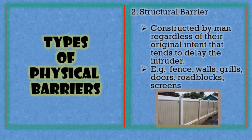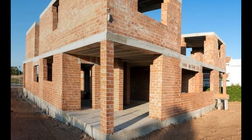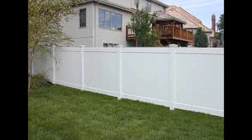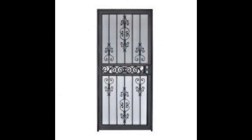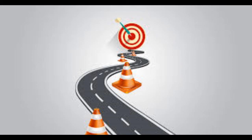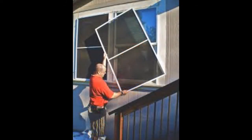Focusing on structural barriers — in other words, man-made barriers. Examples include fences; we will later discuss types of fences such as solid fences and full-view fences. Walls and fences are different: walls are attached directly to the building, while fences like our perimeter fences are somewhat separated from the building. Other structural barriers include grills (usually installed in windows or as backup for doors), roadblocks to control vehicular ways, and screens.